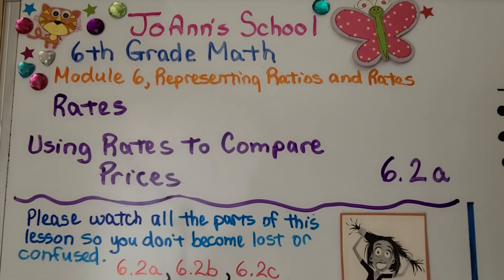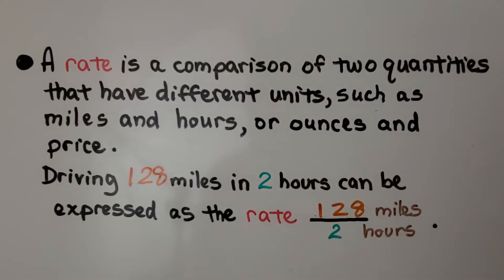Lesson 6.2a: Using Rates to Compare Prices. A rate is a comparison of two quantities, meaning two amounts that have different units, such as miles and hours. Those are two different units. Or ounces and price.